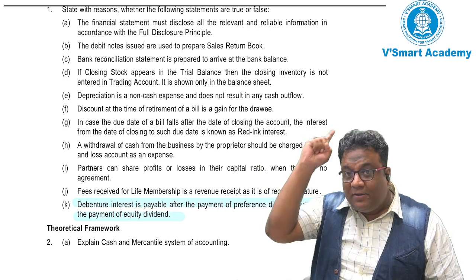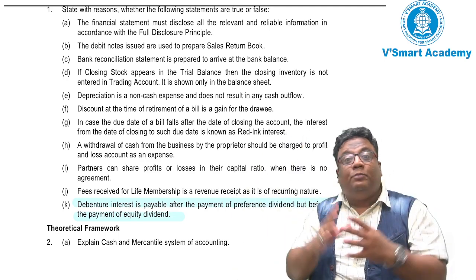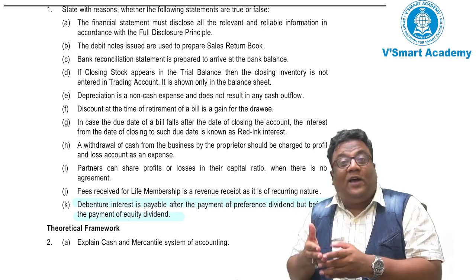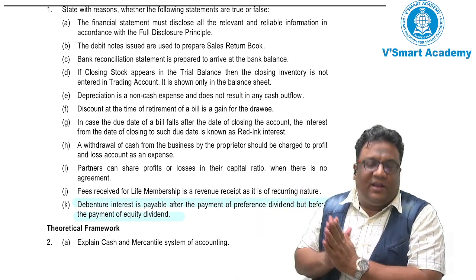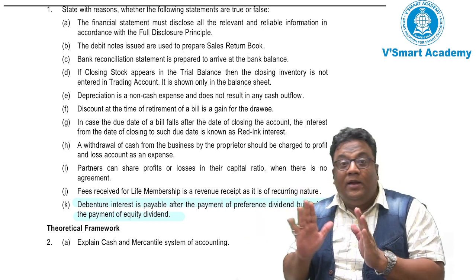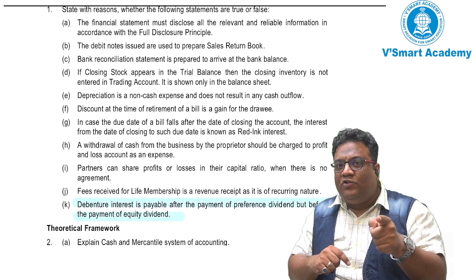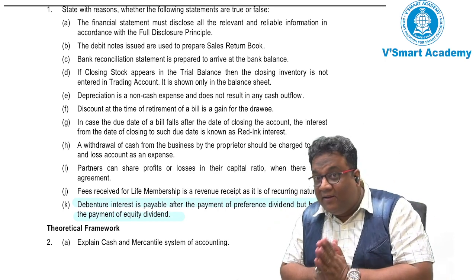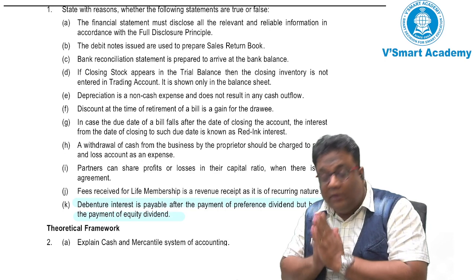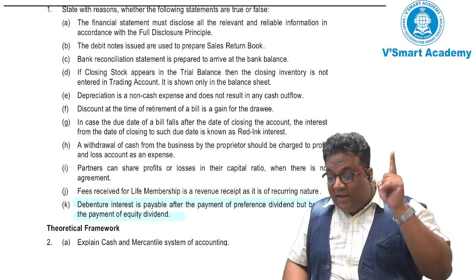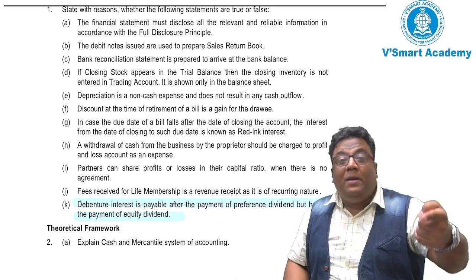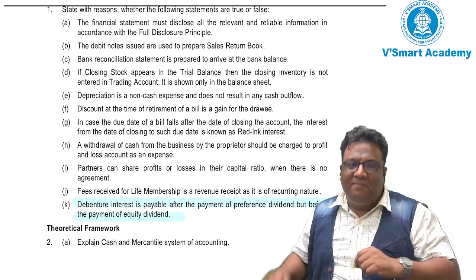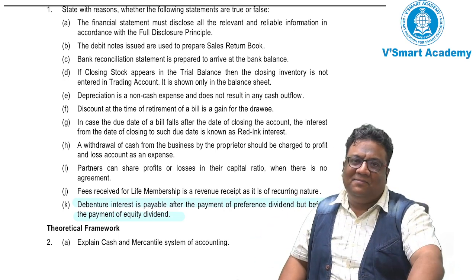Shareholders ke pehle priority kisi ko diya jata hai — lender ko. Isliye profit mein se sabse pehle interest pay kiya jayega in debenture holders ko. Uske baad jo profit bacha, usme se sarkar ko tax denge. Uske baad jo bacha, woh paise mein se dividend diya jayega. Dividend mein priority zaroor preferential holders ko pehle milta hai, phir baad mein equity shareholders ko. So what is the answer? It's FALSE. Debenture interest is payable before payment of preference or equity dividend.